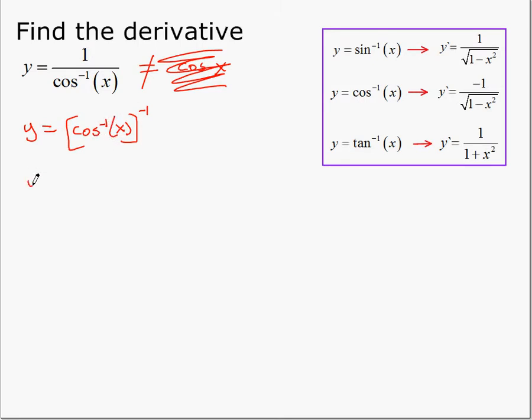So the derivative then is minus 1 times cosine inverse of x all to the minus 2. Remember chain rule. We started outside, minus 1 minus 1 gives minus 2, multiplied by the derivative of the inside. So the derivative of cosine inverse is minus 1 over root 1 minus x squared times the derivative of x, which is 1.